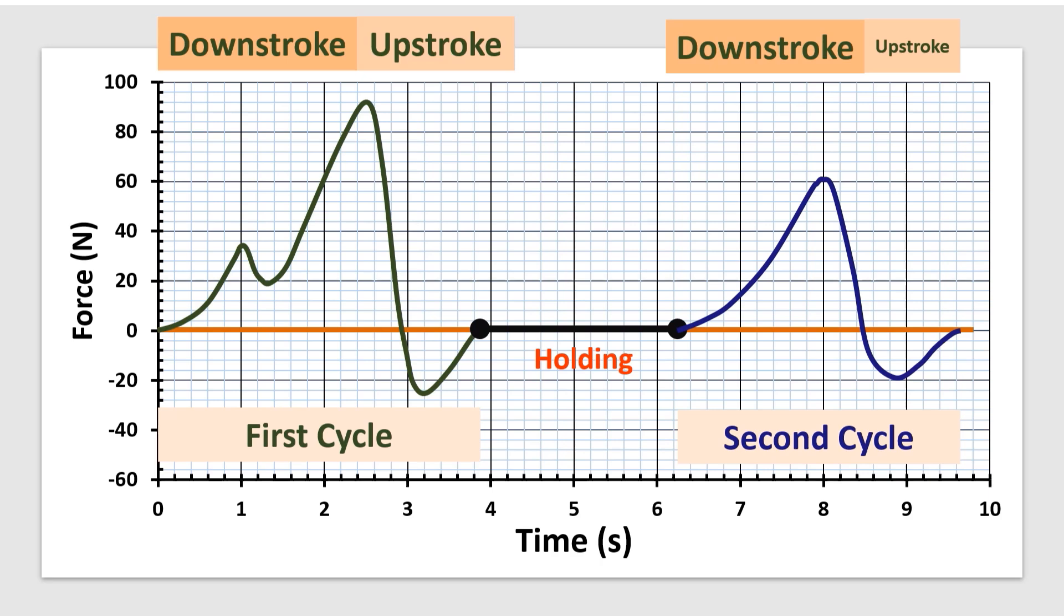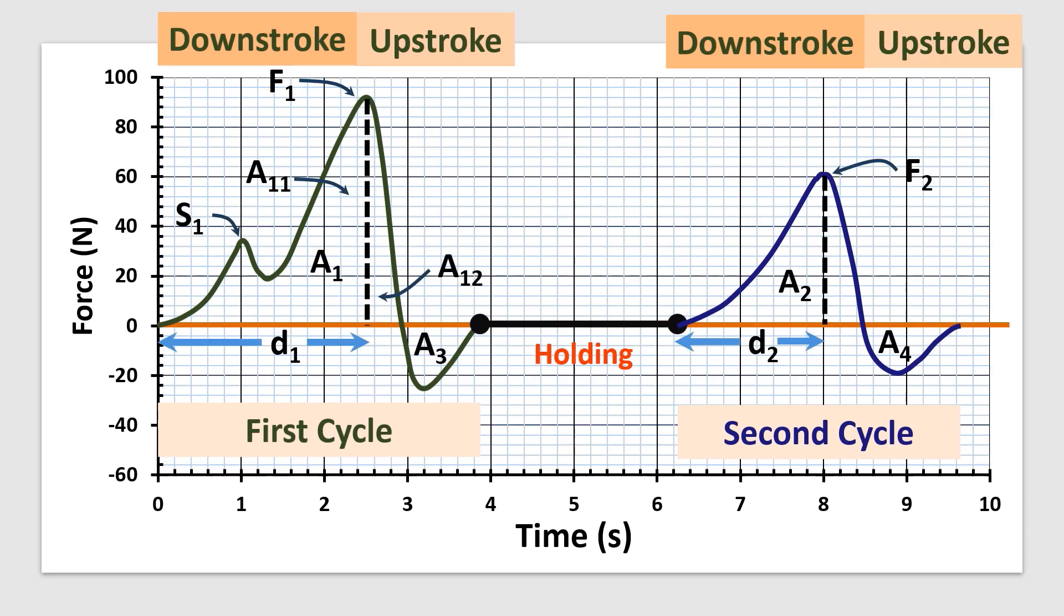Fracturability is the force at the first break in the compression of first cycle. It is marked as S1 and the unit is Newton. Hardness is the peak force of the first compression-decompression cycle, that is force necessary to attain a given deformation. It is marked at maximum force F1 and unit is Newton.